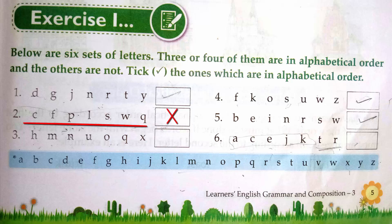Similarly, in third question, H, M, N, U and O. You can see O comes before U, but in this question O is given after U. So this is wrong.